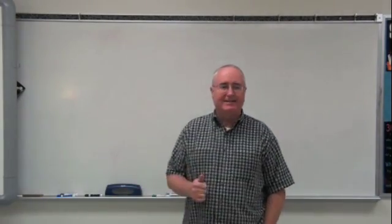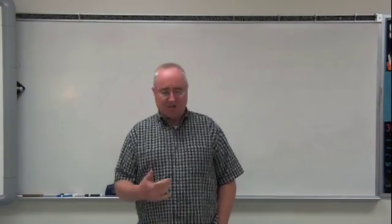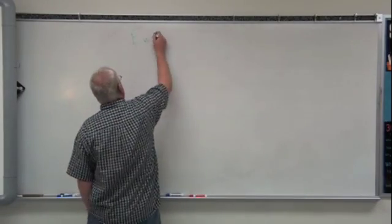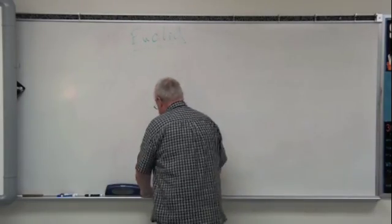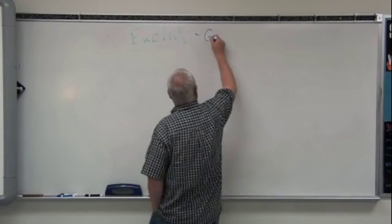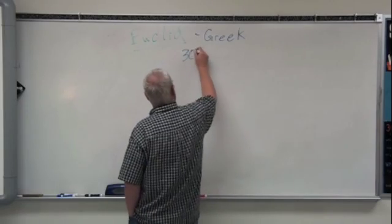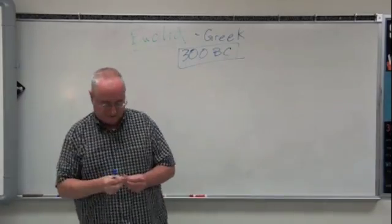Basically, there's one man who's really involved in geometry all the way along. His name is Euclid. Let's get that written down. E-U-C-L-I-D. Euclid. He was a Greek, and he lived in the 300 B.C. area. So you're talking about 2300 years ago.